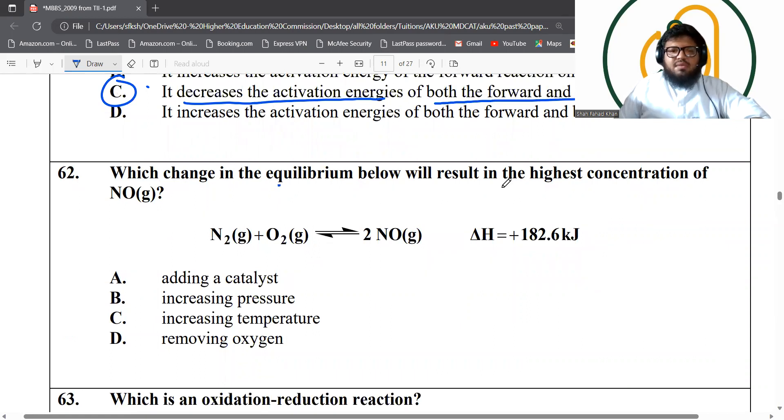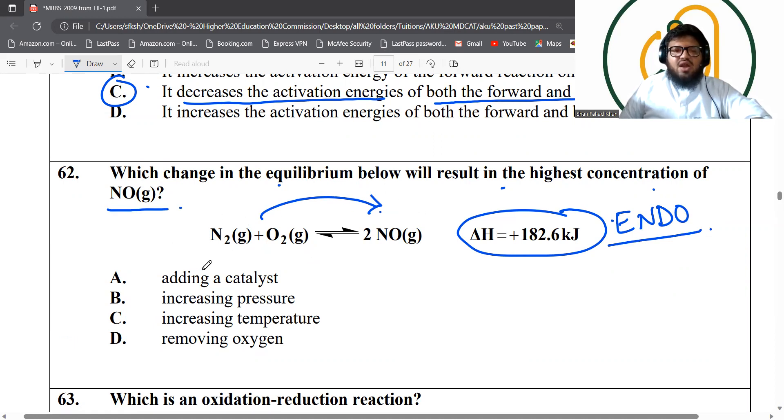Which change in the equilibrium below will result in the highest concentration of nitric oxide? Nitric oxide, we just need to shift the equilibrium to the right hand side. You can see the forward reaction is endothermic reaction. If it's endothermic reaction, then that would mean increasing the temperature will shift the equilibrium to the right hand side, right?